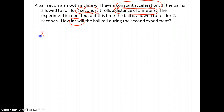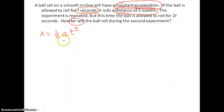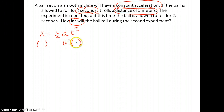The position is equal to one-half at squared. Now let's put our multipliers here. Acceleration is constant, so that stays constant. What ends up changing is the time — the time ends up changing, times two — and we have to make sure to square it.